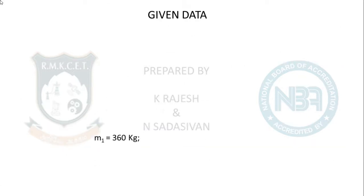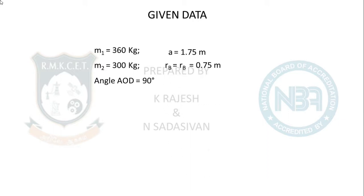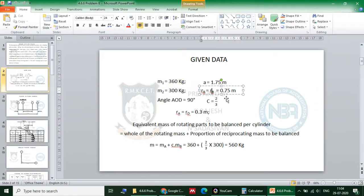Given data: mass of rotating parts M1 = 360 kg, reciprocating parts M2 = 300 kg, angle between cranks = 90 degrees, engine centerline distance = 1.75 m. The radius — Rb equal to Rc equal to 0.75 m — is the balancing mass radius (small b).